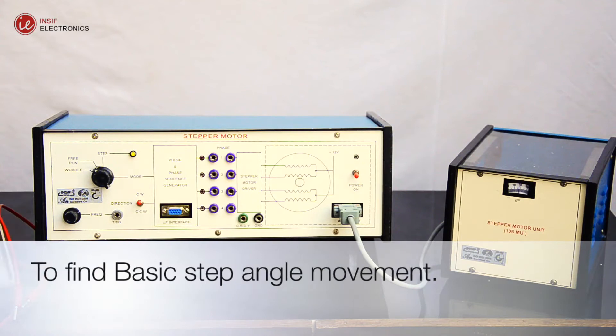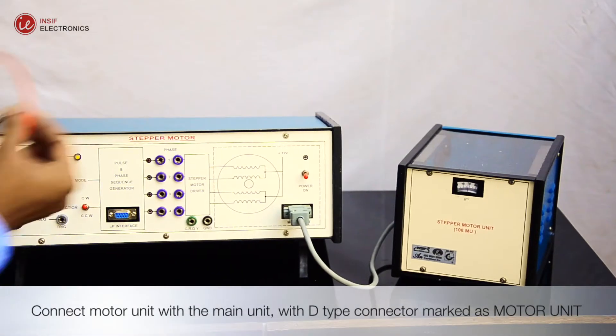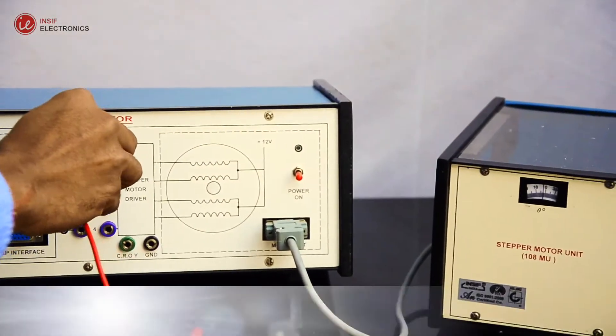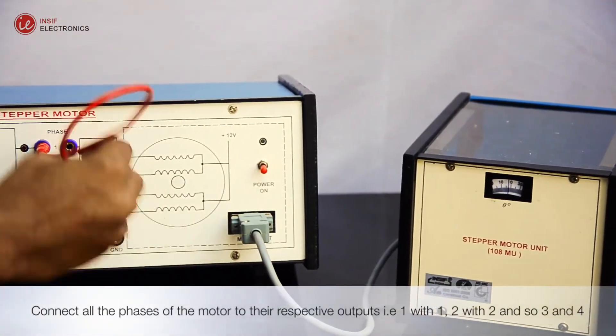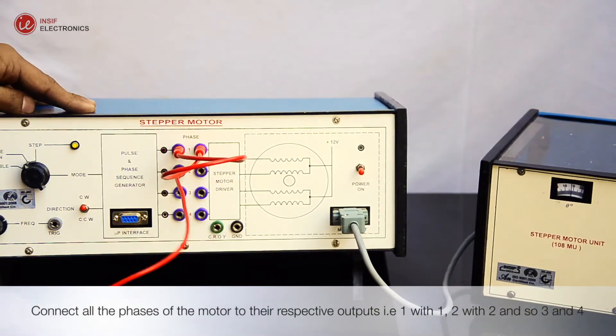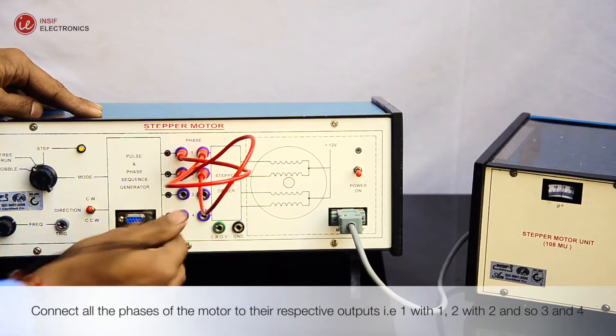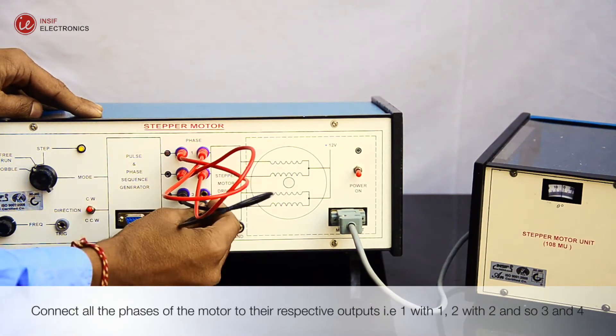Experiment to find basic step angle movement. Connect motor unit with the main unit. Connect all the phases of the motor to their respective outputs, that is 1 with 1, 2 with 2, 3 with 3, and 4 with 4.